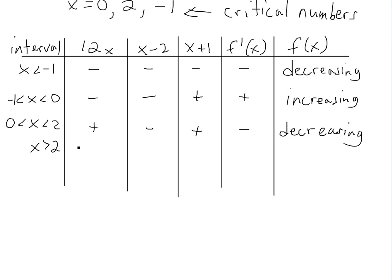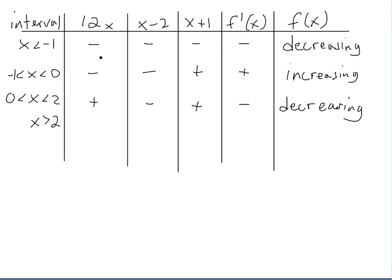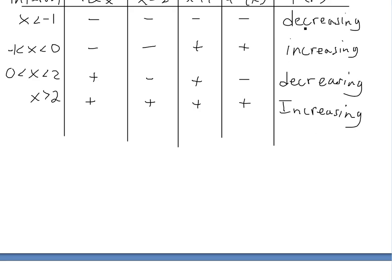For the last interval, when x is greater than 2: 12x is positive. For x minus 2, for example 3 minus 2 is positive. And anything greater than 2 plus 1 is also positive. So all factors are positive, meaning the derivative is positive and f is increasing for all x greater than 2. So altogether the function goes: decreasing, increasing, decreasing, increasing across the four intervals.